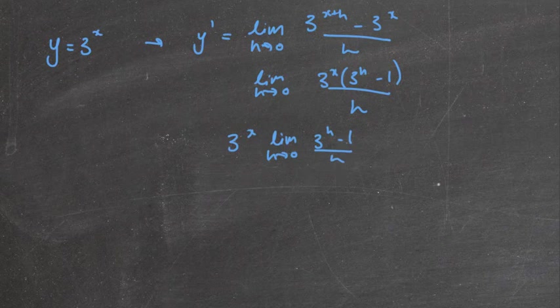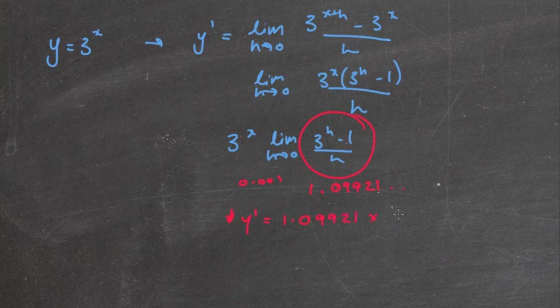So once again, we can't put 0 there because it's going to give me an answer that's an error because it's undefined. So I'm going to chuck it back in. I'm going to chuck in 0.001 just like I did last time because that's very close to 0. So if I put that into my calculator there for h, we're going to come out this time with an answer of 1.00921. So therefore, y' is equal to 1.00921 times 3^x.